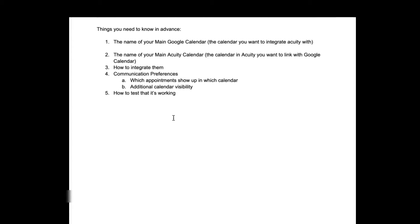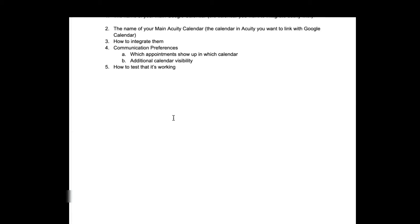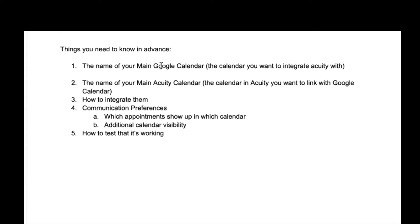There are a couple of things to know before we get started just to eliminate confusion. The first thing you're going to want to know is the name of your main Google calendar — the calendar within Google that you want to speak to Acuity. The next thing is the name of your main Acuity calendar — the calendar within Acuity that you want to talk to your Google calendar. I'm going to show you how to find both, and then we'll discuss how to integrate the two and how to test that it's working.